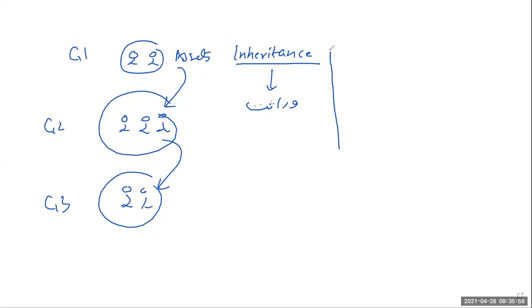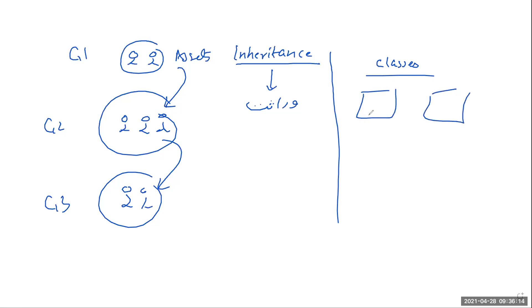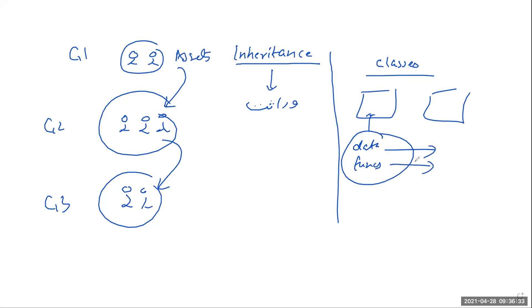In programming, we don't have genes or plots or property. We have classes. A class has two things: data and functions — no plots, no property, no genes. So when we talk about inheritance in classes, the only things which can be inherited are data and functions.